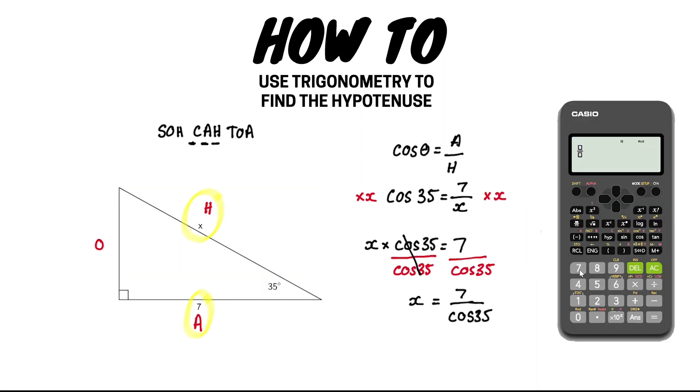At this stage, we can just put the information on the right hand side of the equation into our calculator to get the answer, which to one decimal place, x is equal to 8.5.